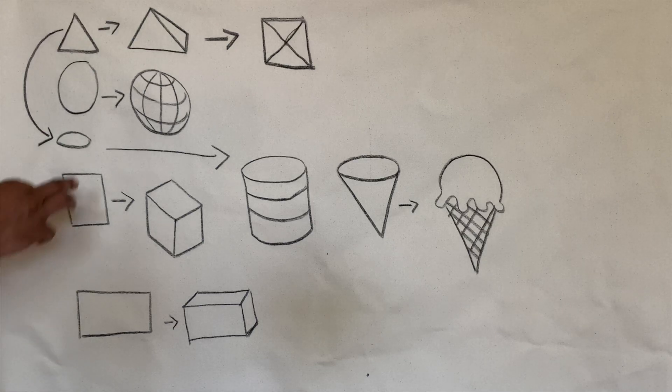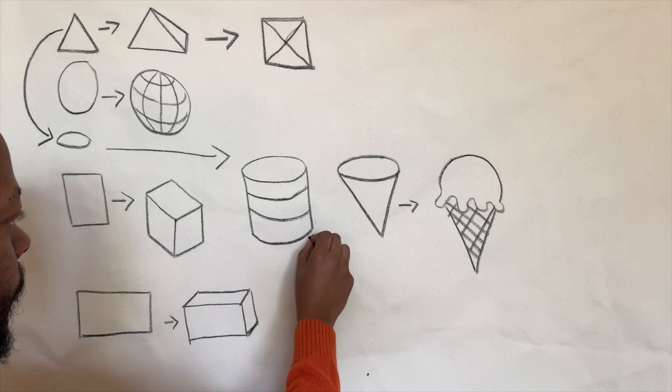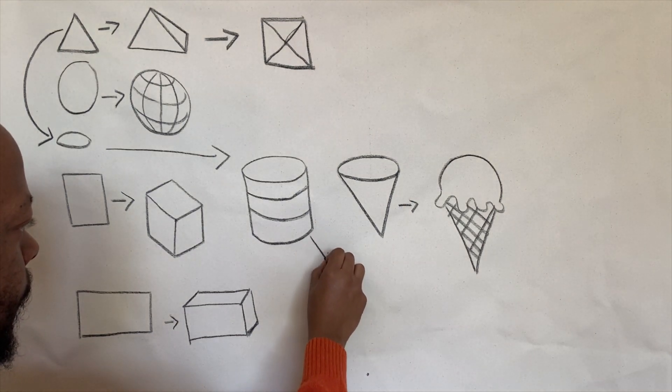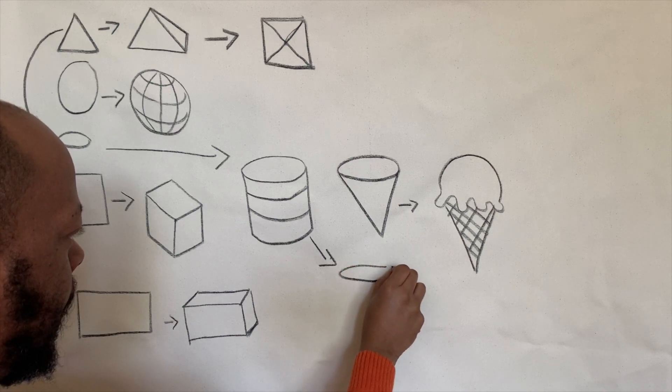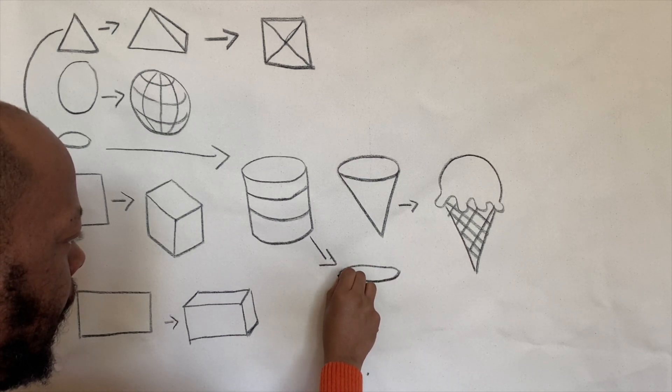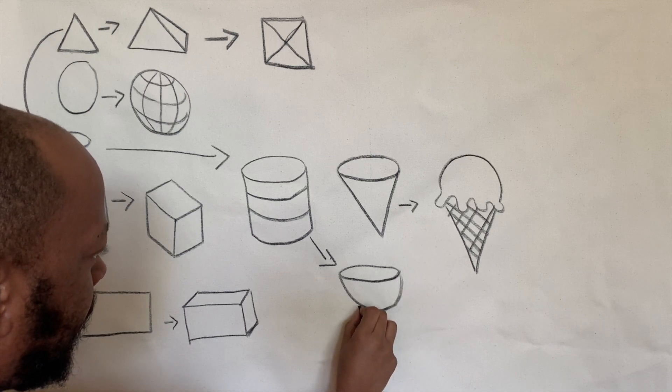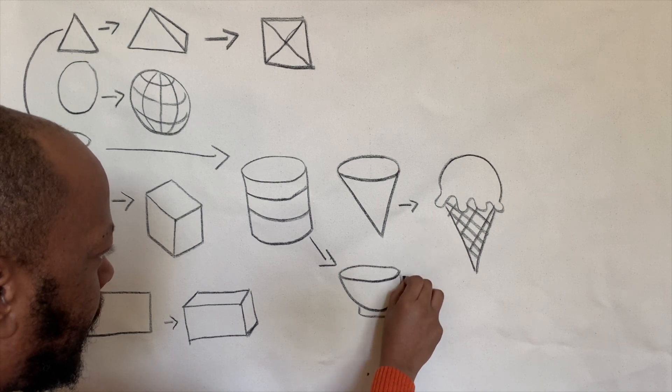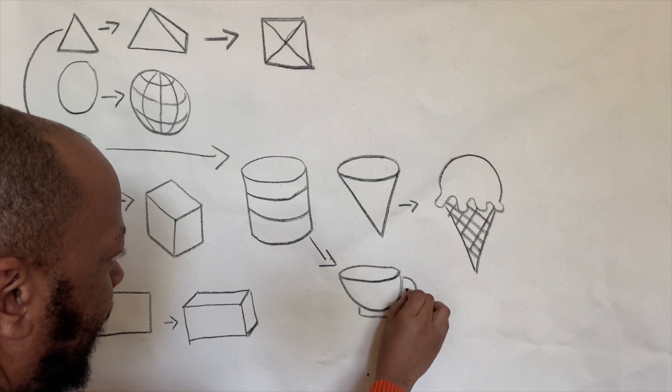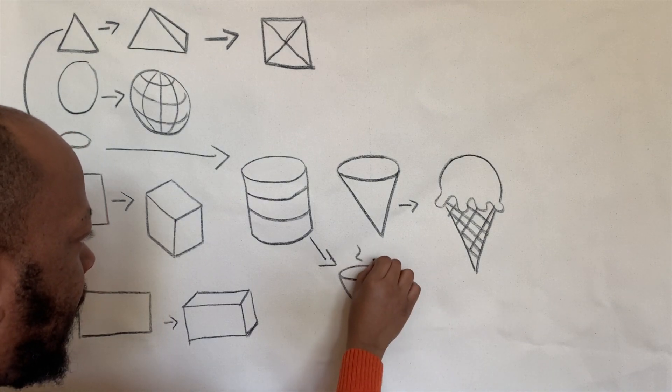Also with your oval shape. Add an oval. Curve it. Put a little rectangle at the bottom. Curve on the side. You have yourself a teacup.